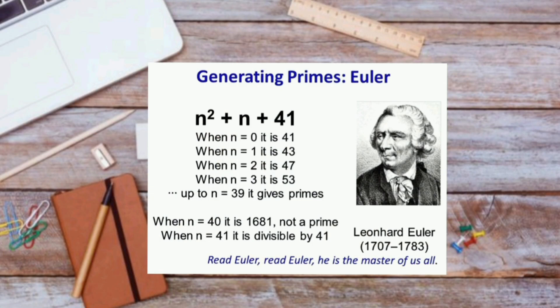One of the coolest attempts was made by the mathematician Leonhard Euler, who came up with this formula, n² plus n, plus 41.